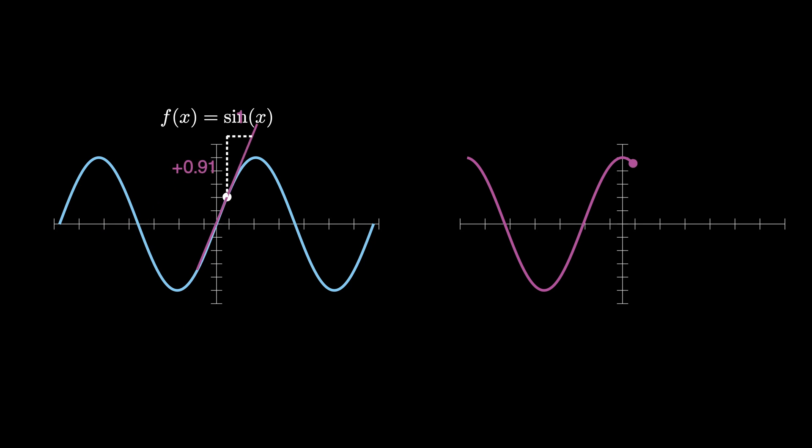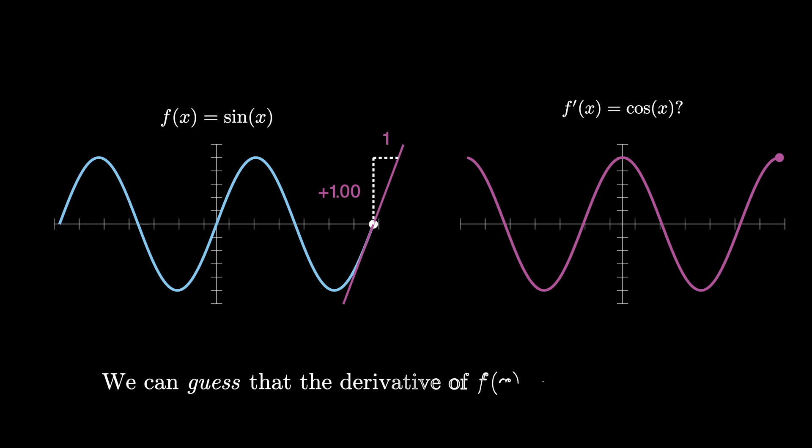As we do this, we see that the slopes map out the graph of a function. This function looks like it could be the cosine function, so we might guess that the derivative of sine of x is cosine of x. But can we be sure?